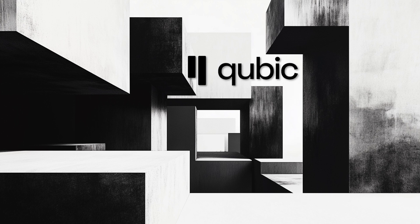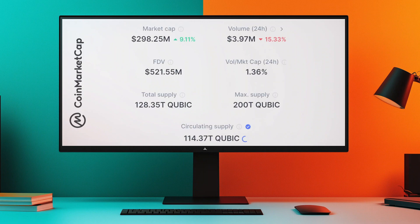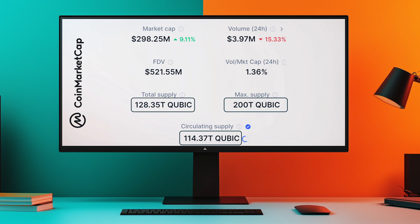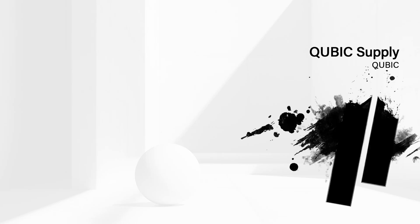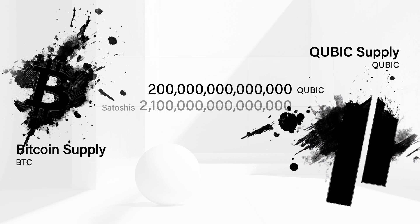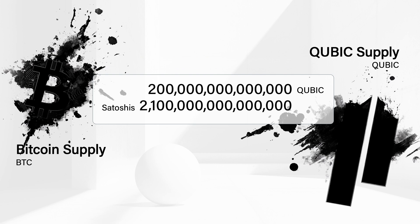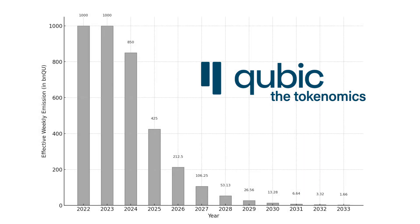Now let's talk about the economics of the Cubic chain. The total possible supply of Cubic coins is 200 trillion units. At the time of this video, the current circulating supply is 114 trillion, with total issued coins of 128 trillion. Approximately 14 trillion Cubic coins have been locked or staked, and close to 16 trillion has been permanently burned already, even with the current low chain activity. Cubic coins are not divisible — while 21 million Bitcoin can be divided into 1.2 quadrillion units of satoshi, you start to see that the Cubic coin supply is actually pretty conservative.